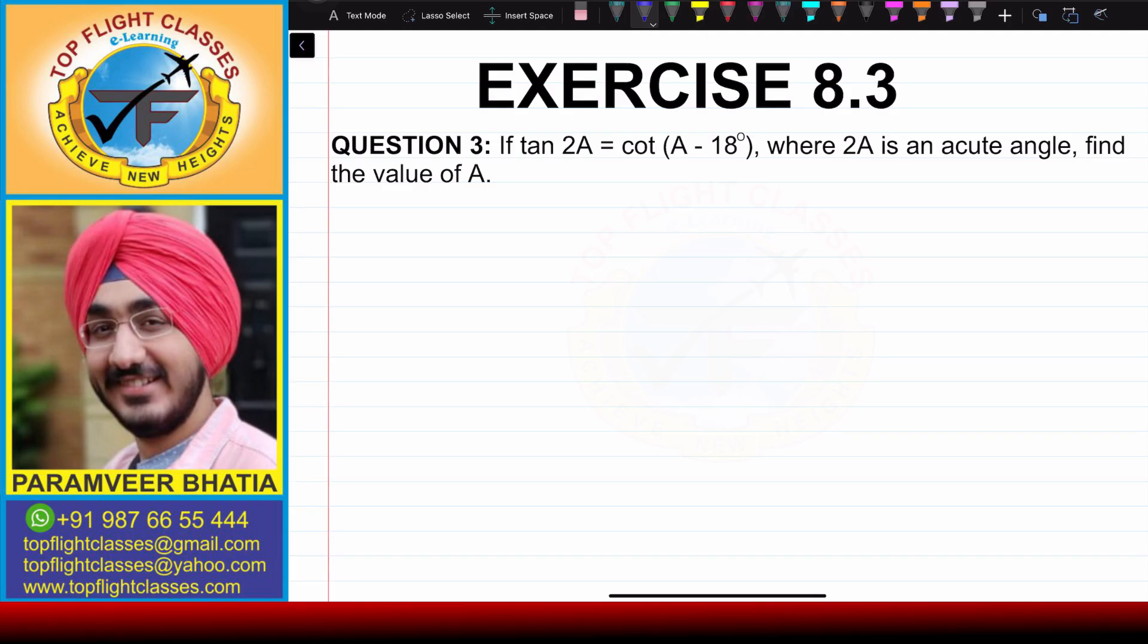In this video, we are going to solve question number 3 of Exercise 8.3. The question says: if tan 2A is equal to cot (A - 18°), where 2A is an acute angle, find the value of A.